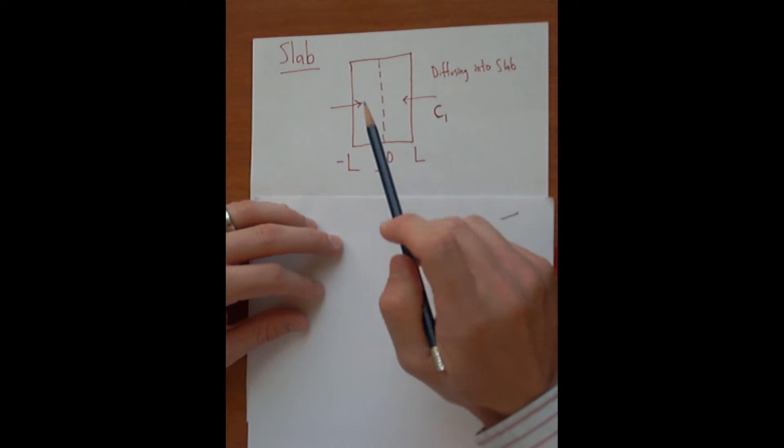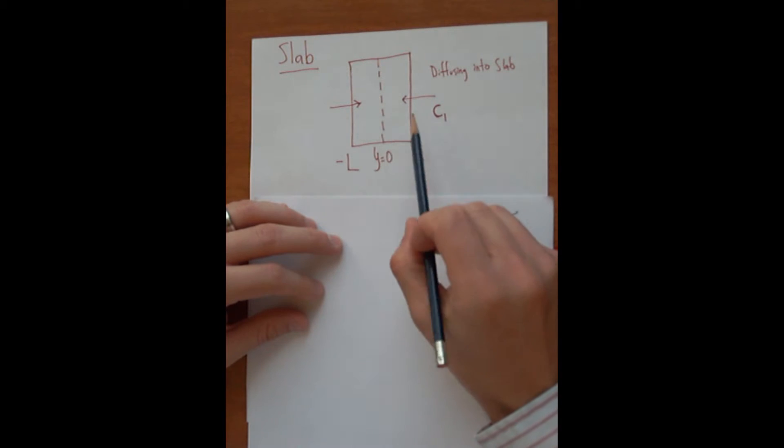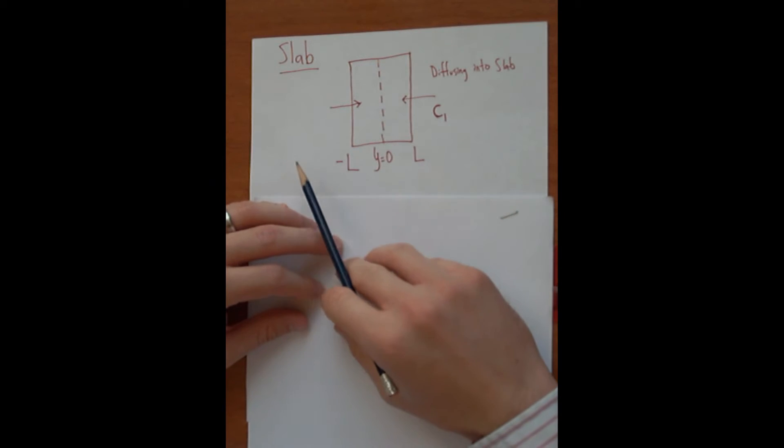The solute, for instance glucose or whatever it may be, outside the slab will say it's C1. And this is diffusing into the slab in both of these sides.